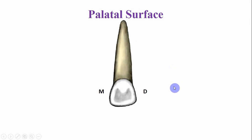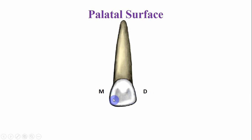This is the palatal aspect. These are the marginal ridges — this is the mesial marginal ridge and this is the distal marginal ridge. The marginal ridges are more prominent, and the cingulum is also more prominent.